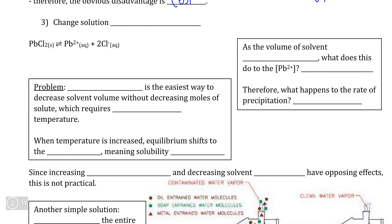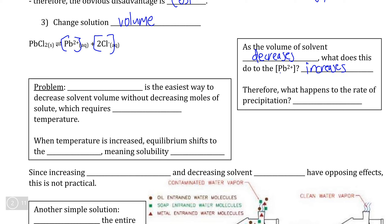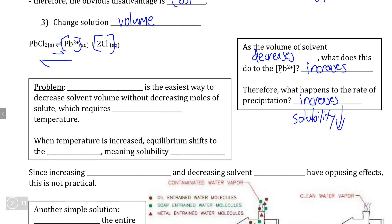What about if we were to actually change the solution volume? If we decrease the amount of solvent — so as the volume of contaminated water decreases — the concentration of not just the toxic heavy metal ion but also the ion used to precipitate it is going to increase. If the concentration of both ions increases, we would be increasing the reverse rate of the reaction, causing more precipitate to form if the reverse rate is greater than the forward rate. Therefore, the rate of precipitation increases and the solubility of our precipitate decreases because the precipitation reaction is favored over the dissociation reaction.